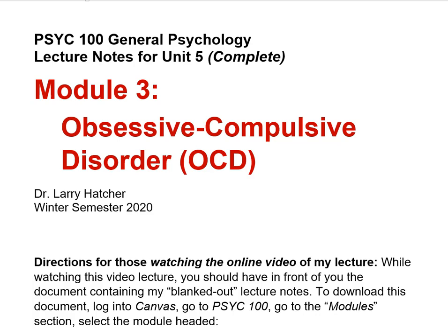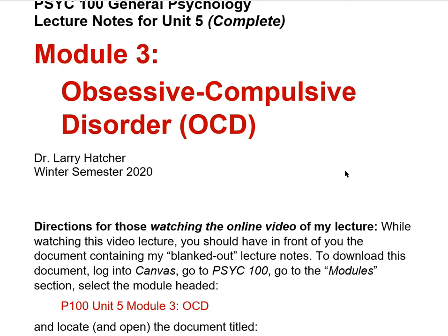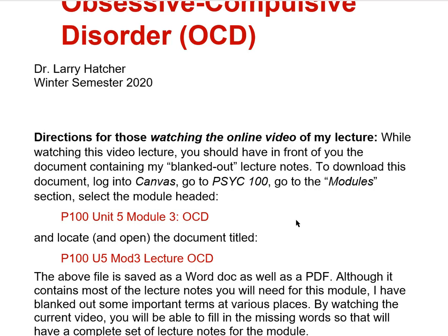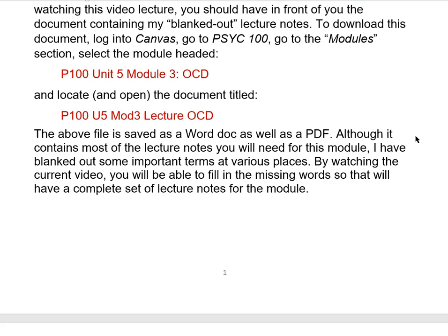If you're watching the online video of my lecture, you should have in front of you the document that contains my blanked-out lecture notes. To download this document, log into Canvas, go to Psych 100, go to the module section, select the module headed P100 Unit 5 Module 3 OCD, then locate and open the document titled P100 U5 Mod 3 Lecture OCD. I saved it as a Word doc as well as PDF. It has most of the lecture notes you'll need, but I've blanked out some terms — by watching this video you'll be able to fill in the missing words.